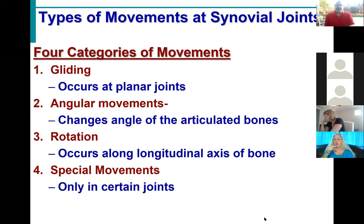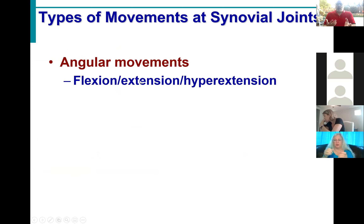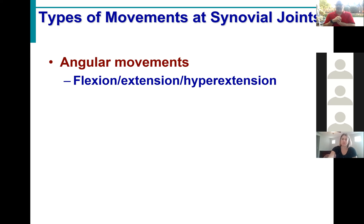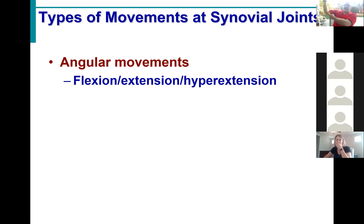Let's talk about angular motions. With an angular motion — not surprisingly like many of our directional terms — it comes in pairs: flexion and extension. What does it mean to flex a joint? It means to decrease the angle. Right now the angle of my elbow is 180 degrees; now it is 90 degrees; now it is 45. Those are all examples of flexion — a flexion is where we decrease the angle.